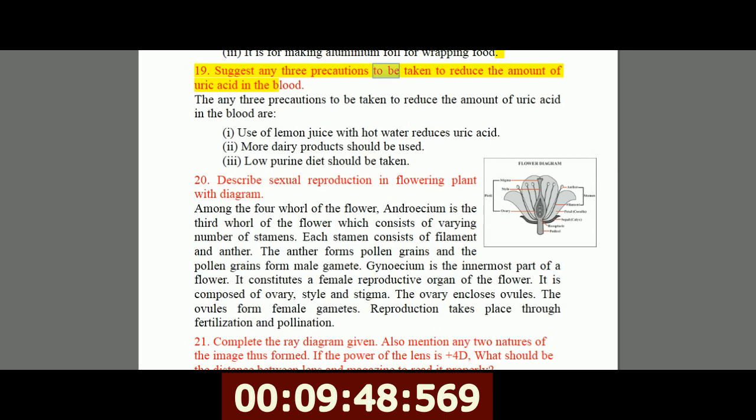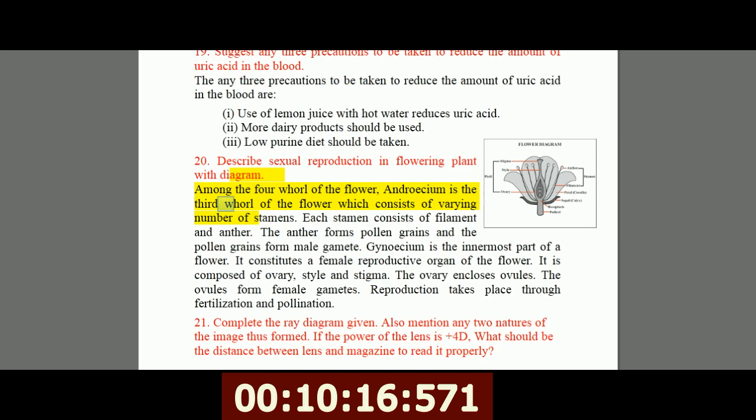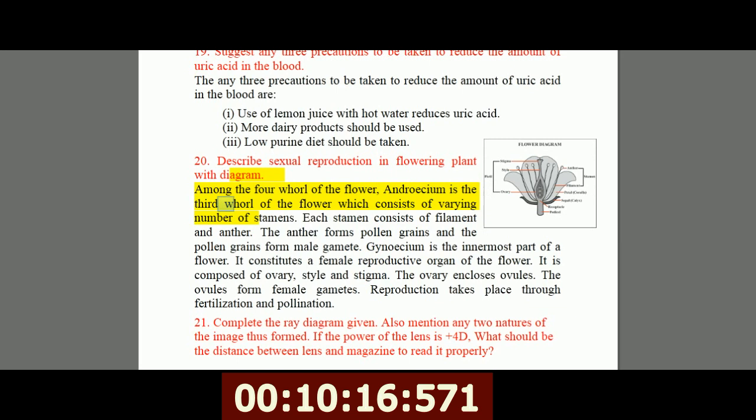19. Suggest any three precautions to be taken to reduce the amount of uric acid in the blood. The three precautions to be taken to reduce the amount of uric acid in the blood are: I, use of lemon juice with hot water reduces uric acid. II, more dairy products should be used. III, low purine diet should be taken. 20. Describe sexual reproduction in flowering plant with diagram. Among the four whorls of the flower, androecium is the third whorl of the flower which consists of varying number of stamens. Each stamen consists of filament and anther. The anther forms pollen grains, and the pollen grains form male gametes. Gynoecium is the innermost part of a flower. It constitutes a female reproductive organ of the flower. It is composed of ovary, style, and stigma. The ovary encloses ovules. The ovules form female gametes. Reproduction takes place through fertilization and pollination.